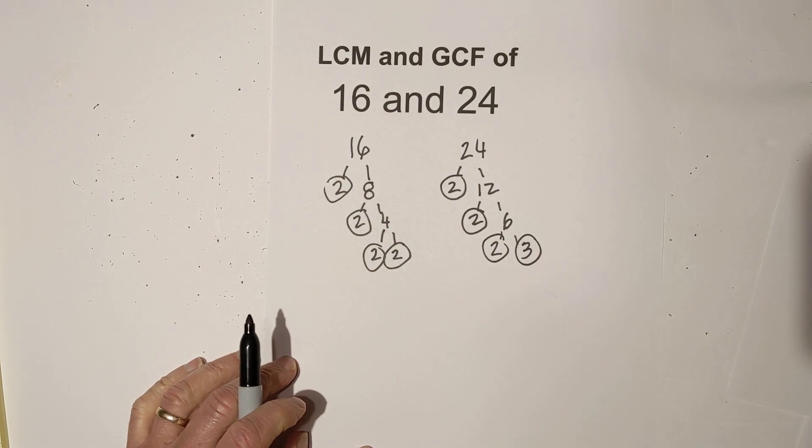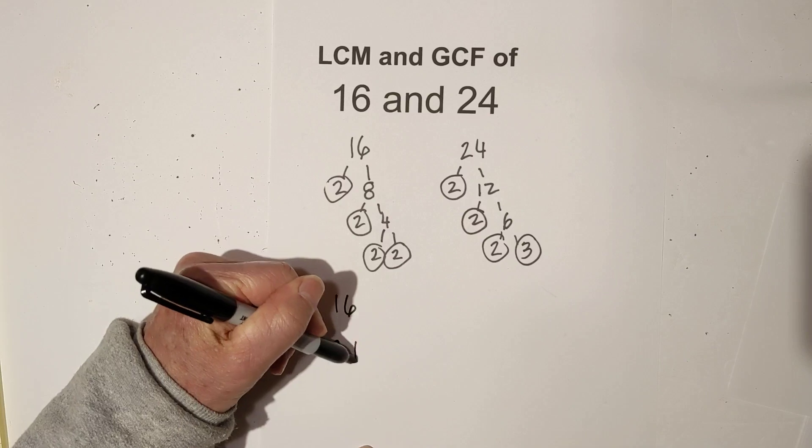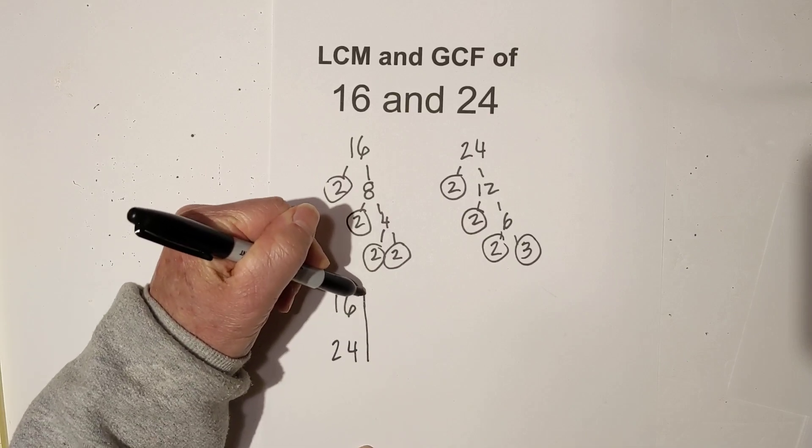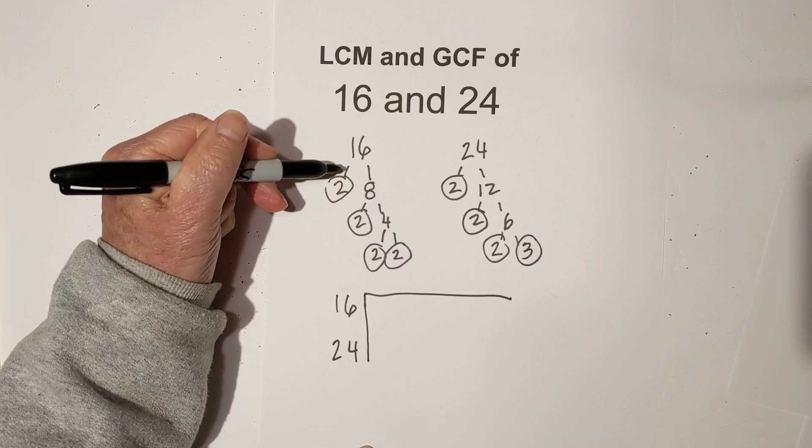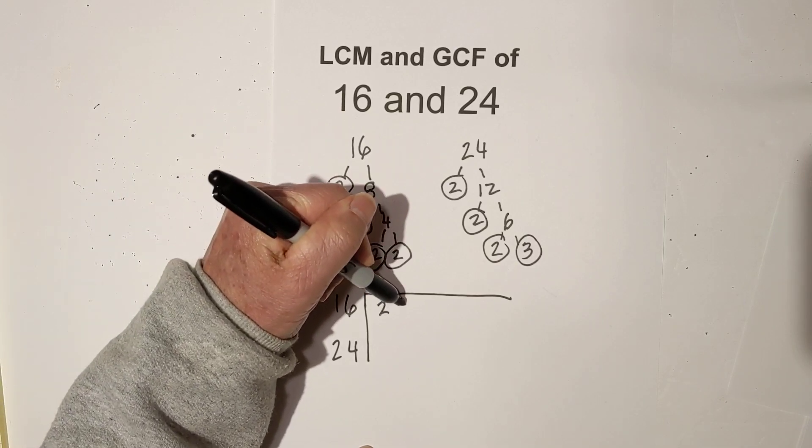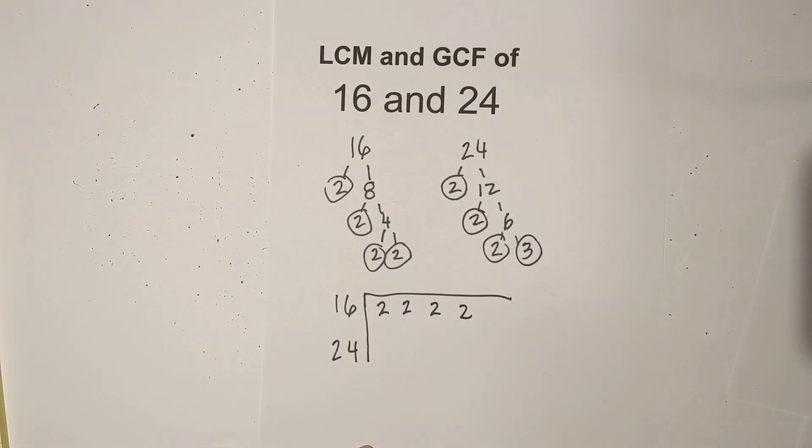So here's all my prime numbers. Now I like to use a chart, and this just keeps you organized, it really works well. And so I just transfer all the prime numbers of 16 into the chart. So it's 2, and 2, and 2, and 2. So there's all the 2's.